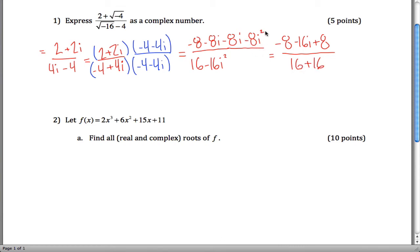Negative 8i squared is the same as positive 8 and negative 16i squared is the same as positive 16. And the negative 8 and the positive 8 cancel out, so you get negative 16i divided by 32, which is just negative one half i is our final answer.